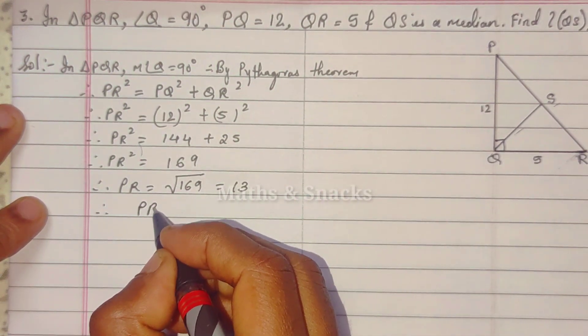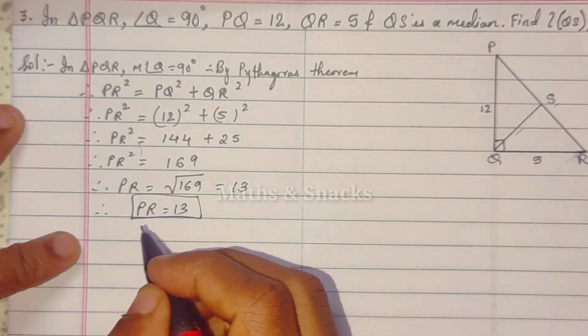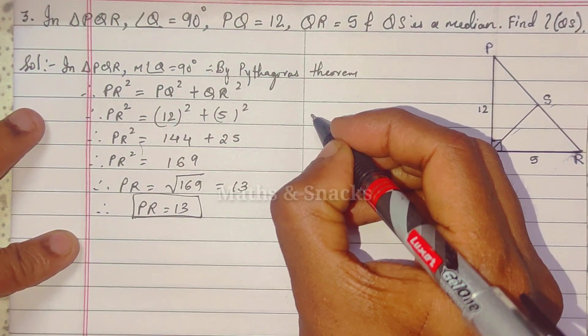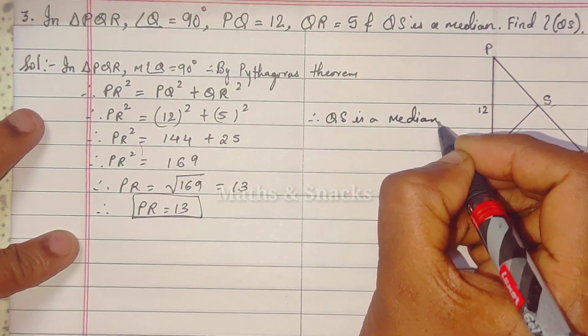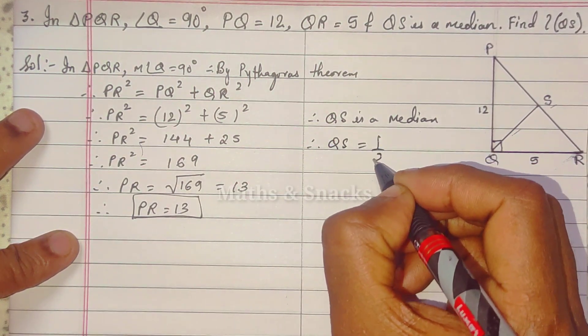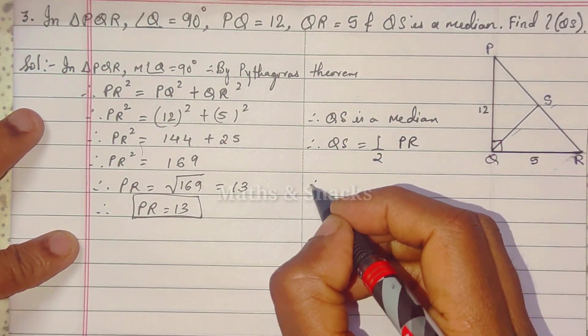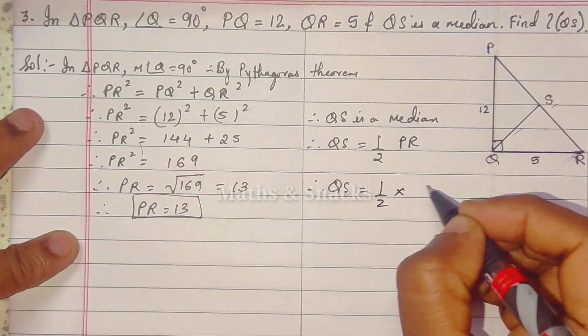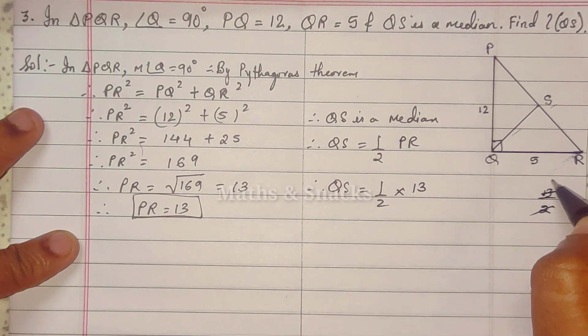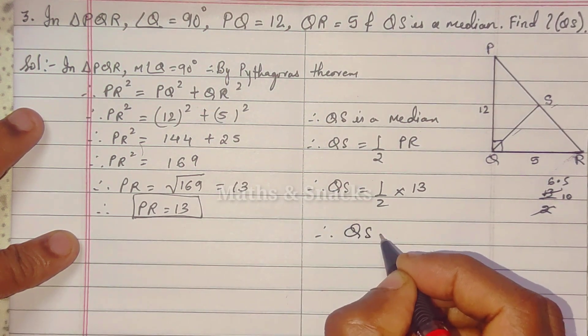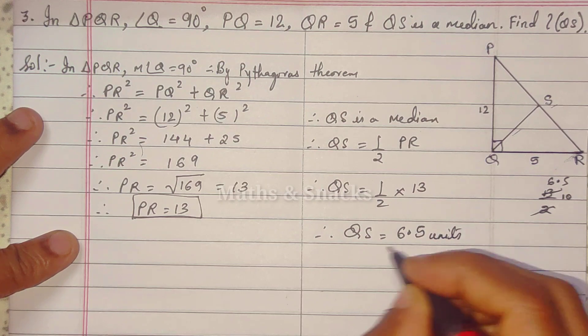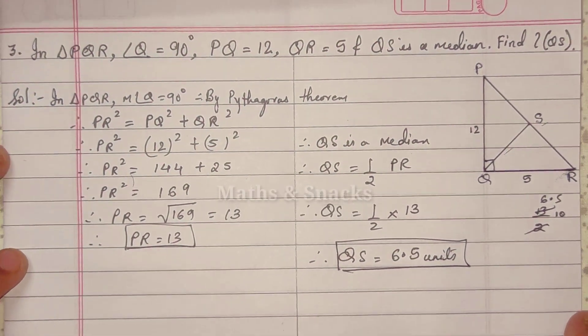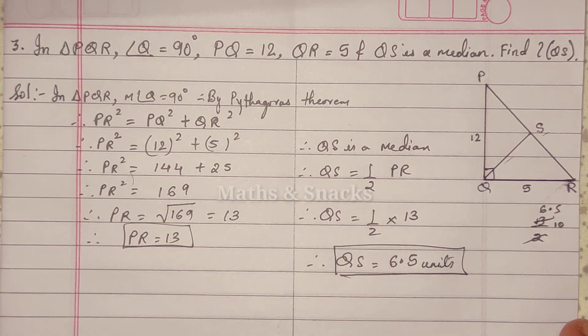So PR equals 13. So we got PR, but the answer QS we do not know. So therefore, QS is a median. So median formula, QS equals half of hypotenuse PR. So QS equals half into 13. So QS equals 6.5 units. Therefore QS equals 6.5 units. So when we don't get centimeter or meter, we write units. I hope you all have understood. Okay.